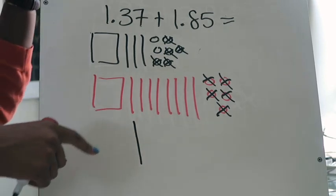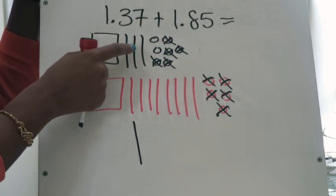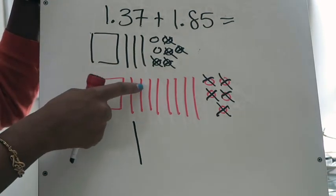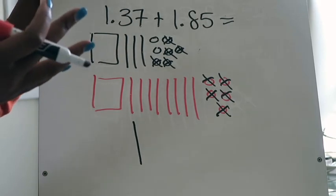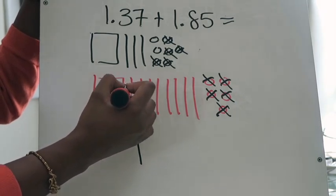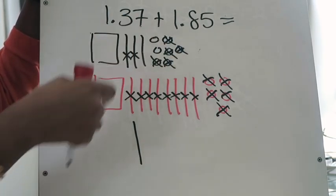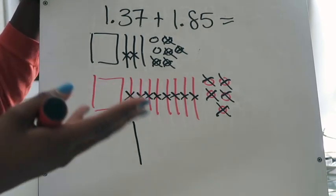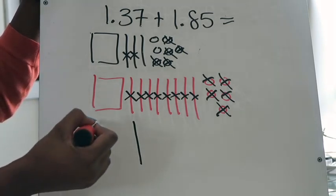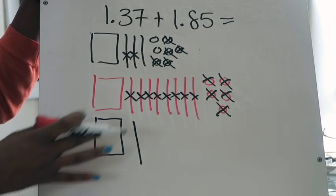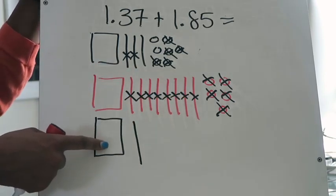Moving on to the tenths place, I have a total of eleven tenths — one, two, three, four, five, six, seven, eight, nine, ten, eleven — so yes, I have too many. I'm going to cross out ten of these: one, two, three, four, five, six, seven, eight, nine, ten. I know there are ten tenths in one whole, so I'm going to represent that whole here. You cannot forget to re-represent what you exchanged. If you're regrouping your tenths into a whole, you need to cross them out and also draw them as the whole, because this will be part of your answer. With my wholes, I only have three, so there's nothing left to do.